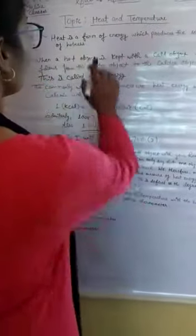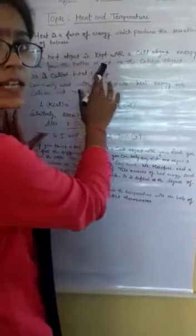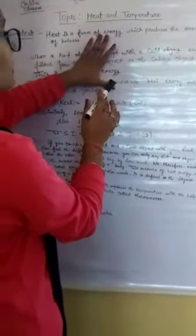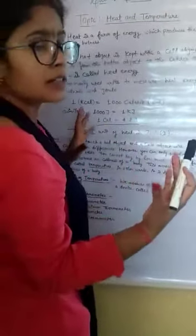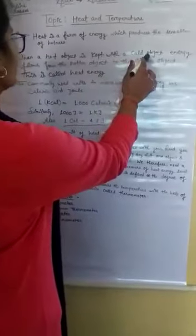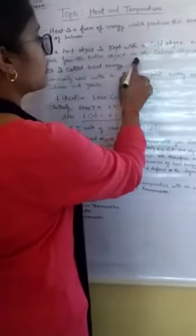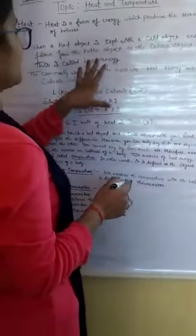Heat. Heat is a form of energy which produces the sensation of hotness. When a hot object is in contact with a cold object, energy flows from the hotter object to the colder object. This is called heat energy.